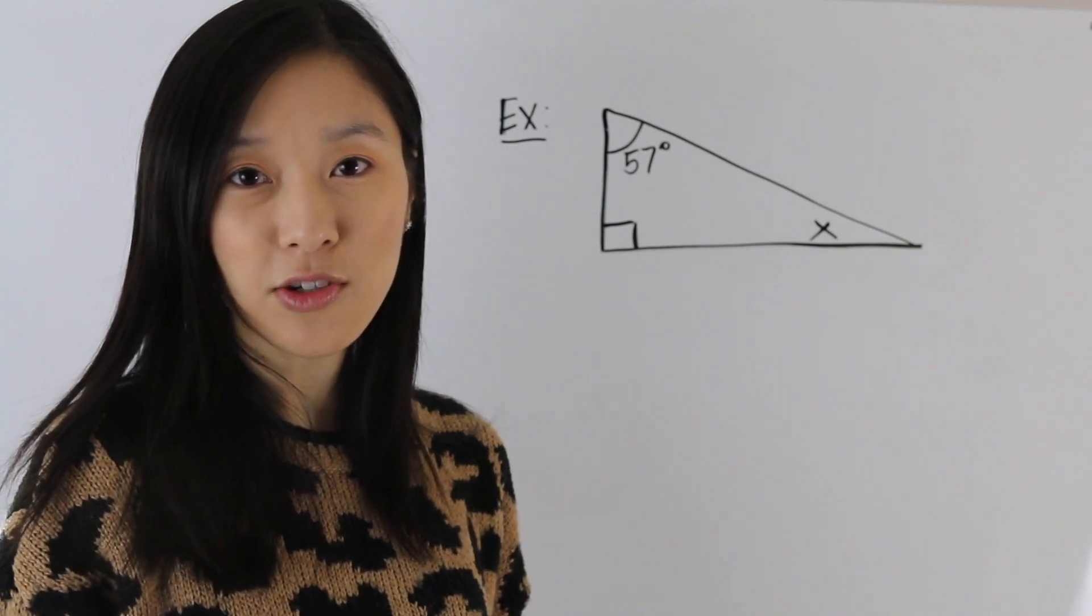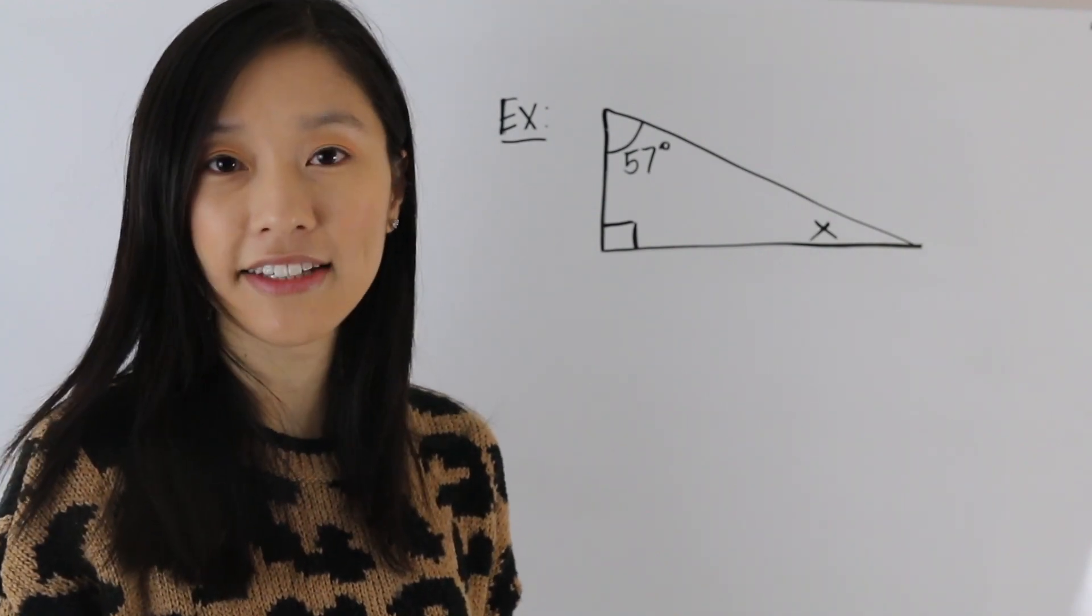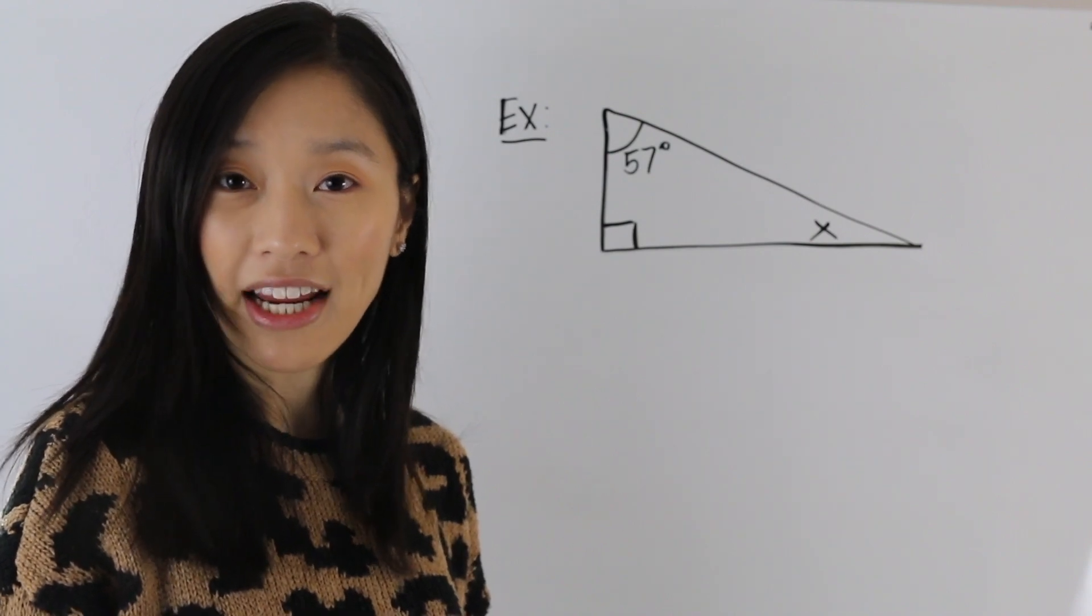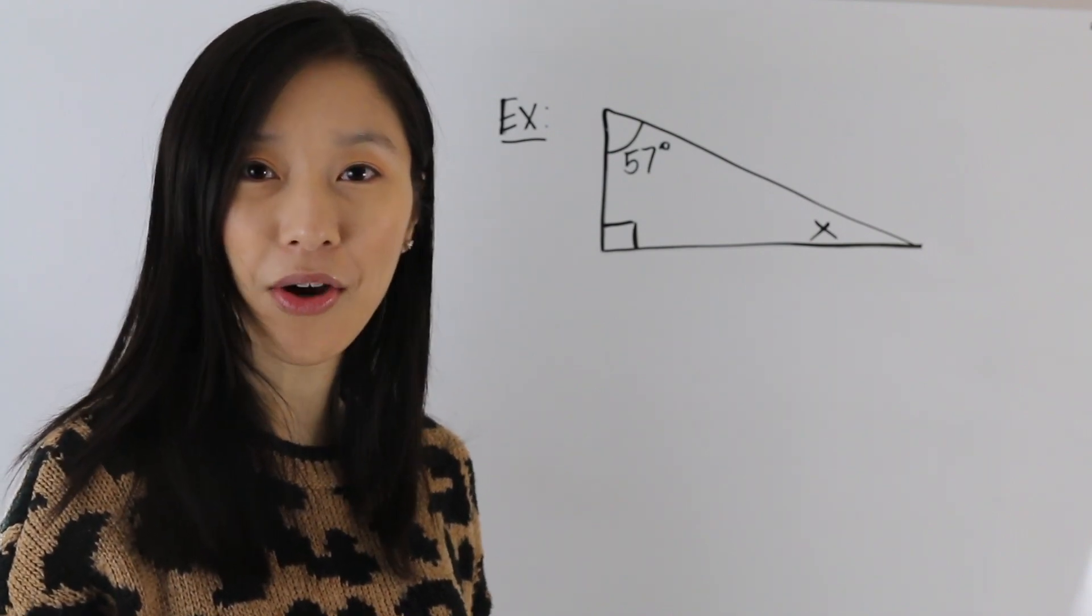So the first step is to sum up all these angles and set them equal to 180 degrees. And we know that it's equal to 180 degrees because we have a triangle. So let's do that.